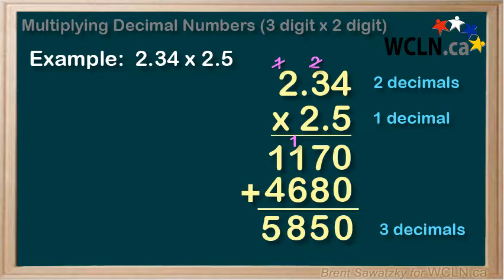5850. Now where does the decimal go? Again count the total number of decimals involved in the numbers that we're multiplying. There are two decimals in the first number and one decimal in the second number. So in our answer we're going to need 2 plus 1 or 3 decimals. So our decimal can move over 1, 2, 3 and our final answer would be 5.850.